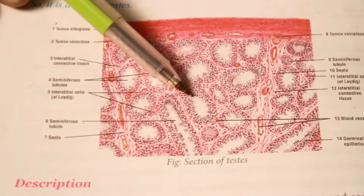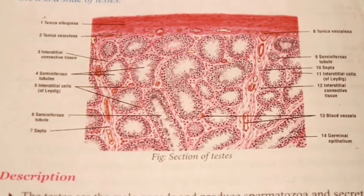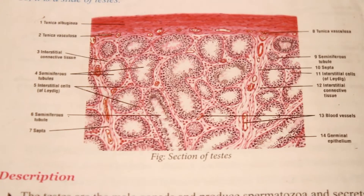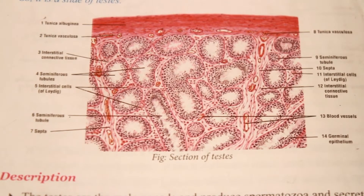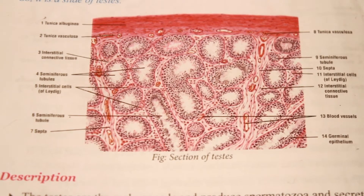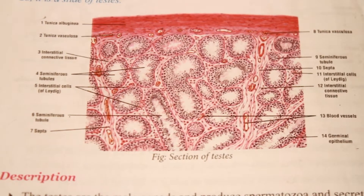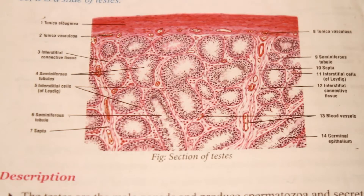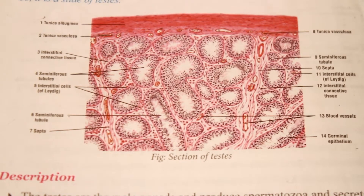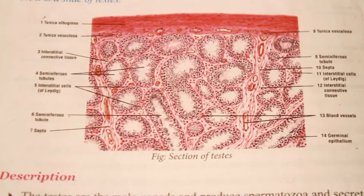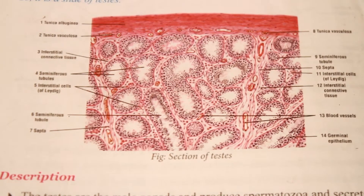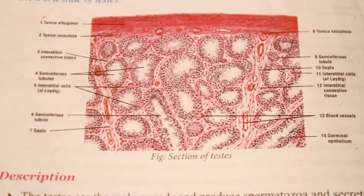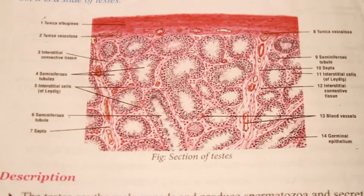Now come to the epididymis. Epididymis is a comma-shaped organ closely related with the testis. The head of the epididymis contains 12 to 20 efferent ductules that arise from the upper end of the rete testis. The rete testis is a closed network of vessels in the mediastinum testis. The 12 to 20 efferent ductules enter into the head of the epididymis, each forming a coiled lobule. These ductules unite to form the canal of the epididymis, which is continuous as the vas deferens.